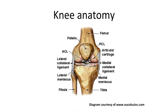The knee joint is a hinge joint. The menisci located on the tibial plateau provide a more congruent surface for interaction with the femoral condyles. Structures which help to stabilize the joint include the collateral and cruciate ligaments.